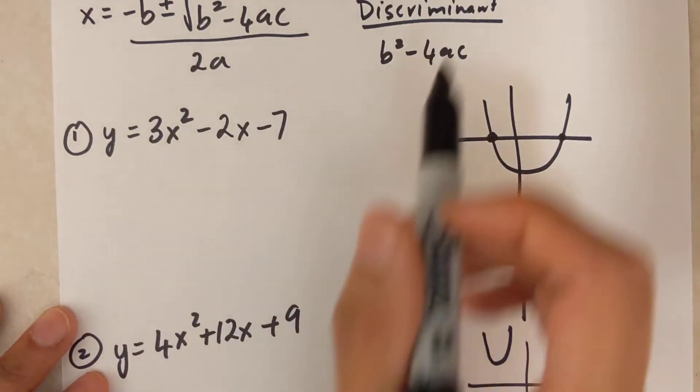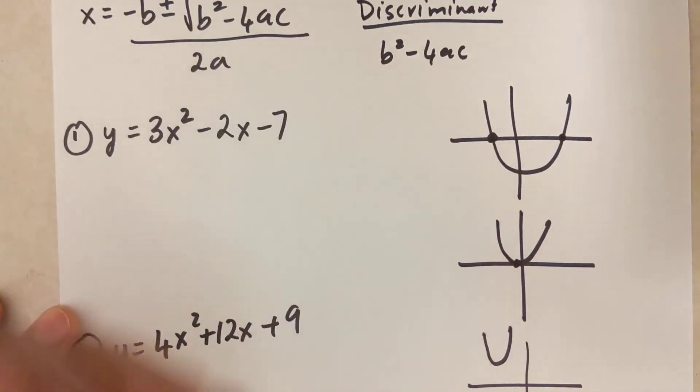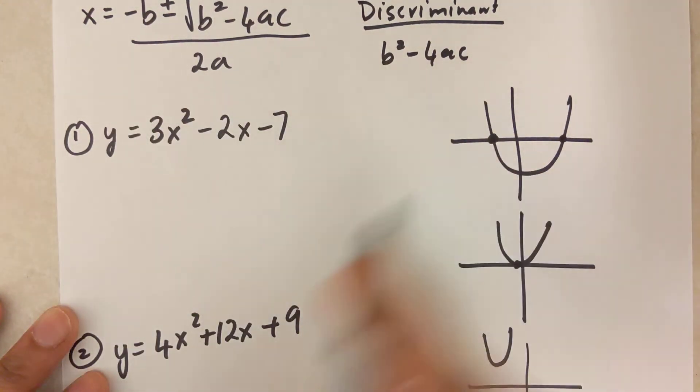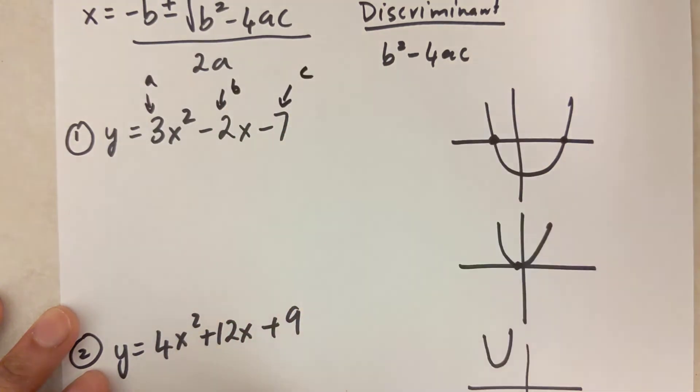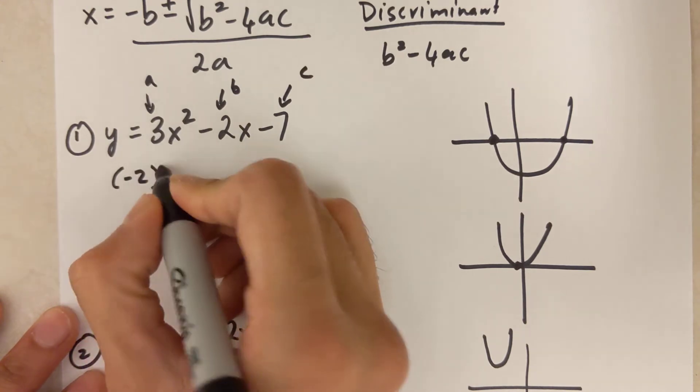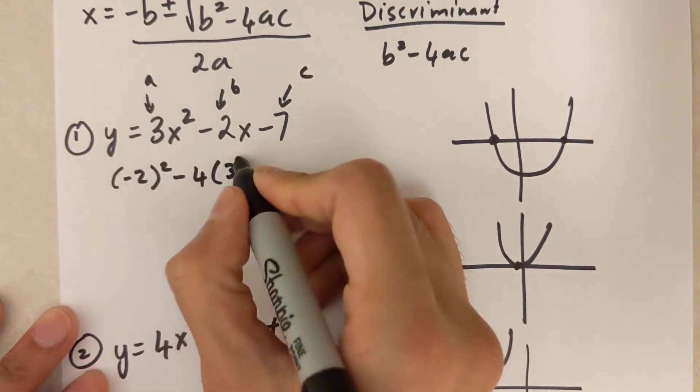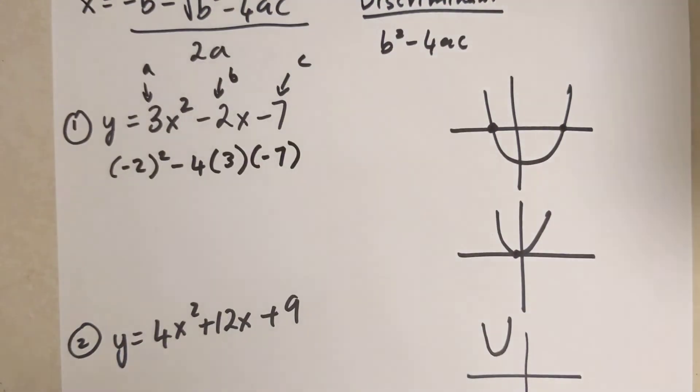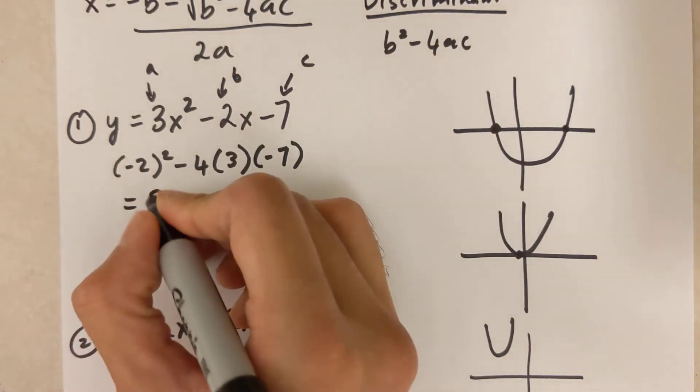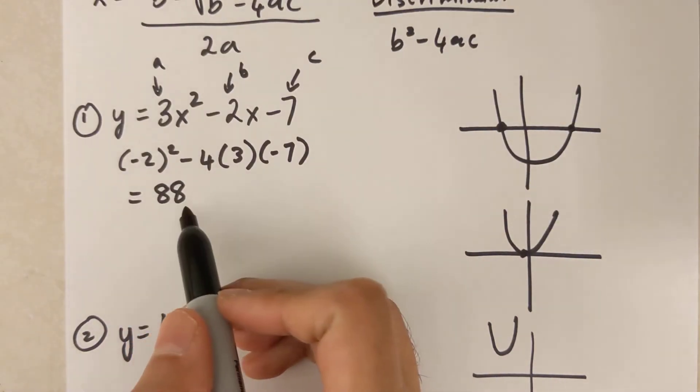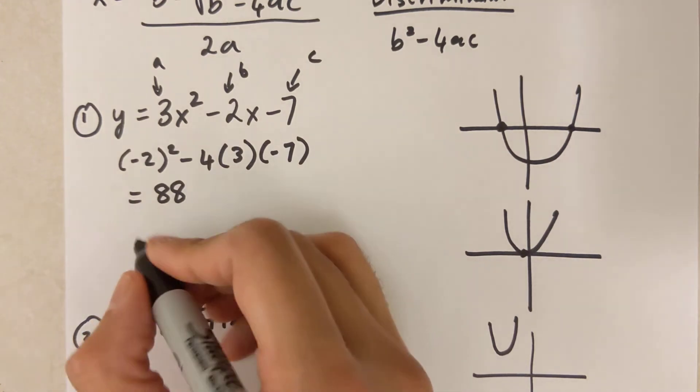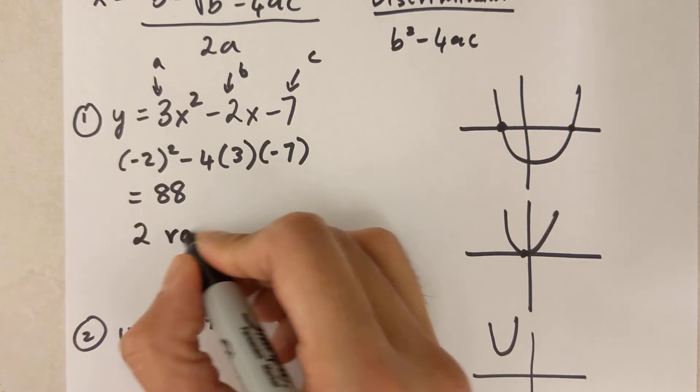So because it says use the discriminant, you don't want to put this into the entire equation, you will lose marks. You only want to put it into this small thing. That's my a, that's my b, that's my c. So b² minus 4 times a times c. I'll put that in my calculator, and I get 88. Now if your discriminant is a positive value, doesn't matter what positive value, any value greater than 0, it means that you have two x-intercepts or two roots.